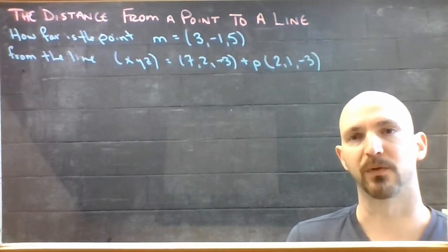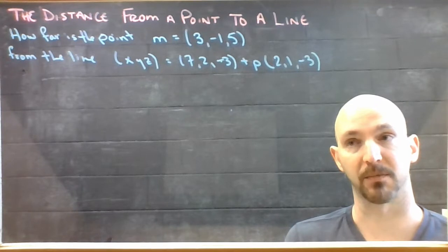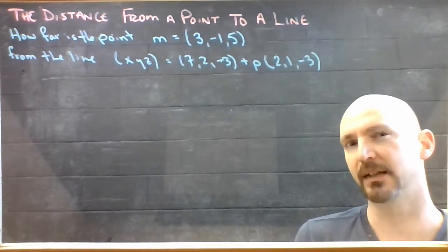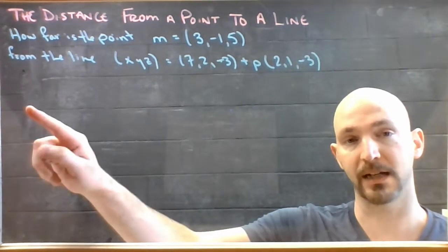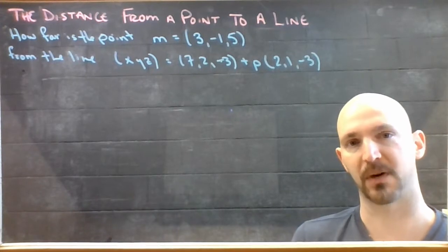A pretty straightforward application of dot product is calculating the distance between a line in three dimensions and a random spot that's nearby.